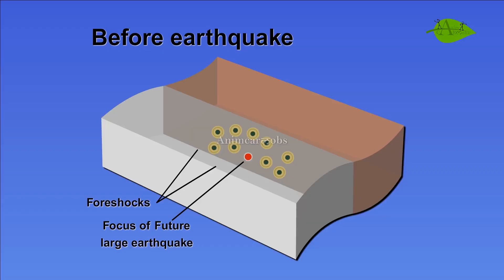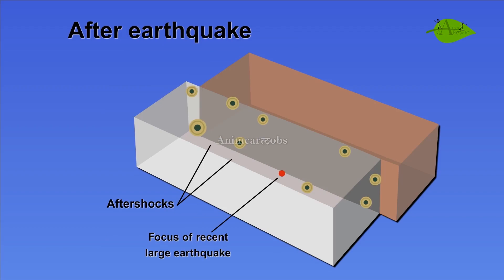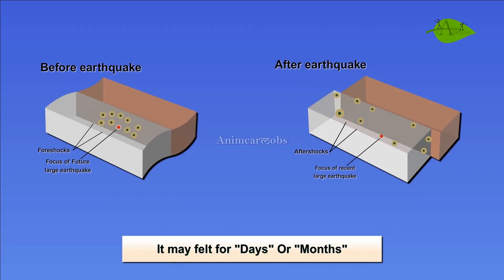Sometimes, a series of tremors called foreshocks can be felt before the actual earthquake happens. Similarly, a series of tremors called aftershocks can be felt after the main shock of an earthquake. Foreshocks and aftershocks may be felt for days or months.